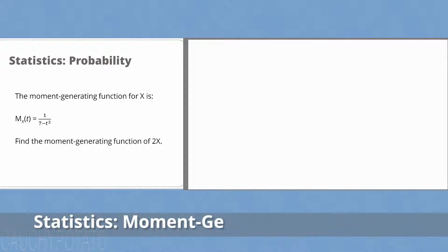Hey internet, for this video I'm going to solve a probability statistics problem. The moment generating function for x is M_x(t) equals 1 over 7 minus t squared. Find the moment generating function of 2x.